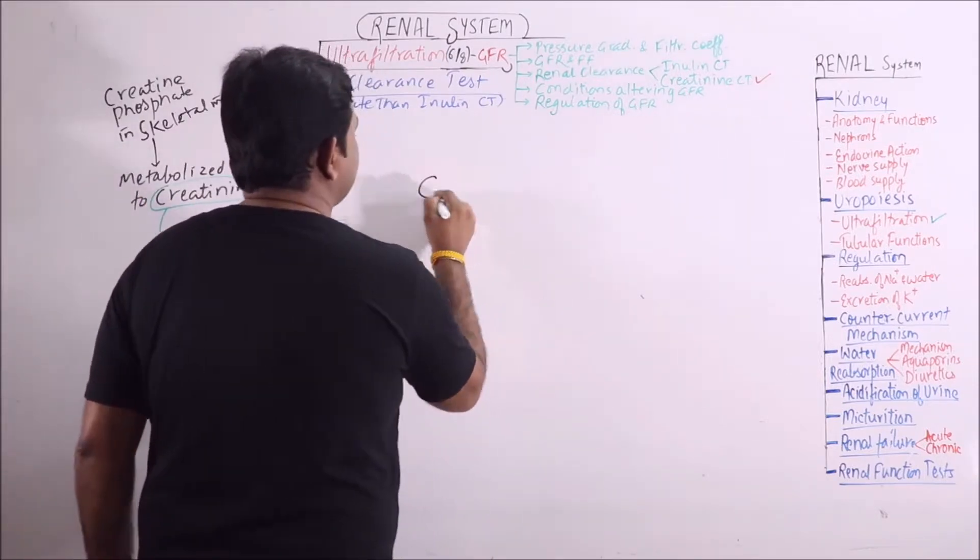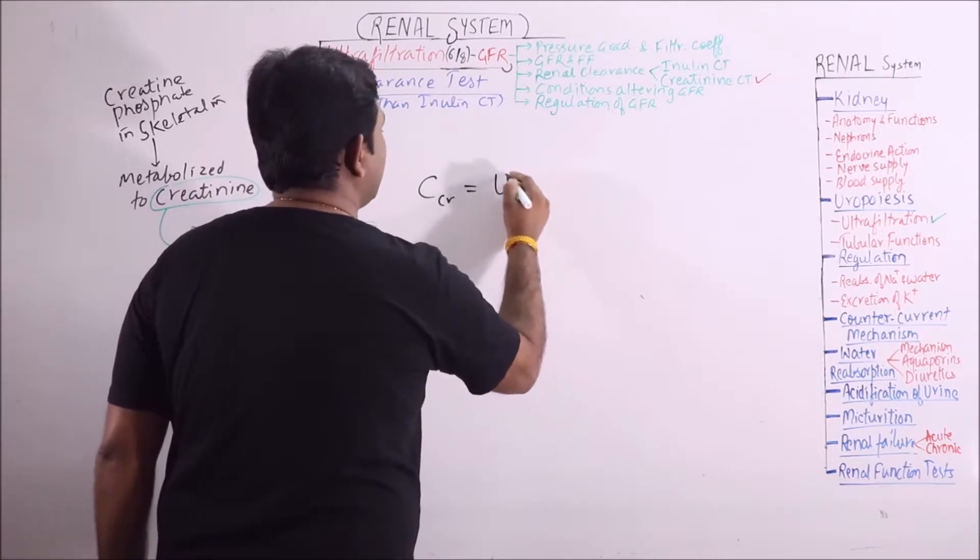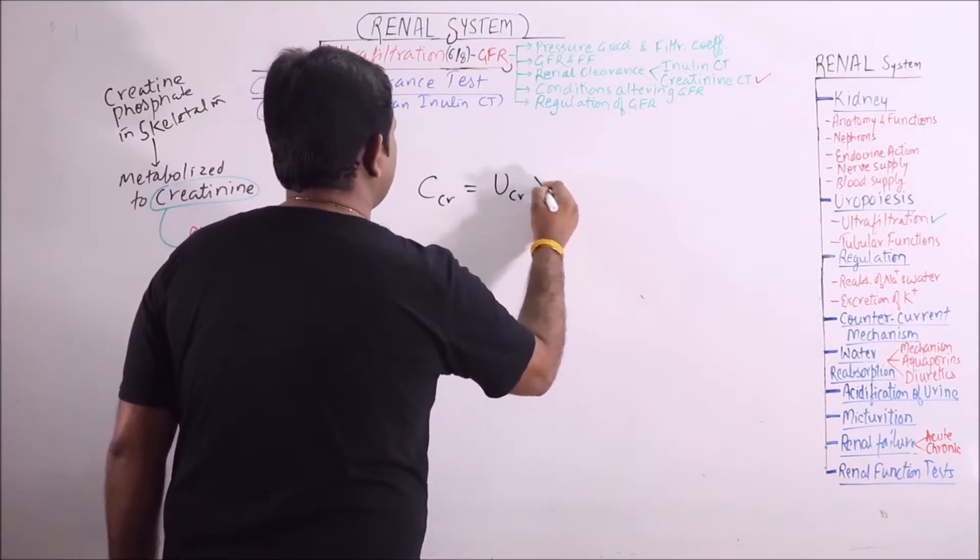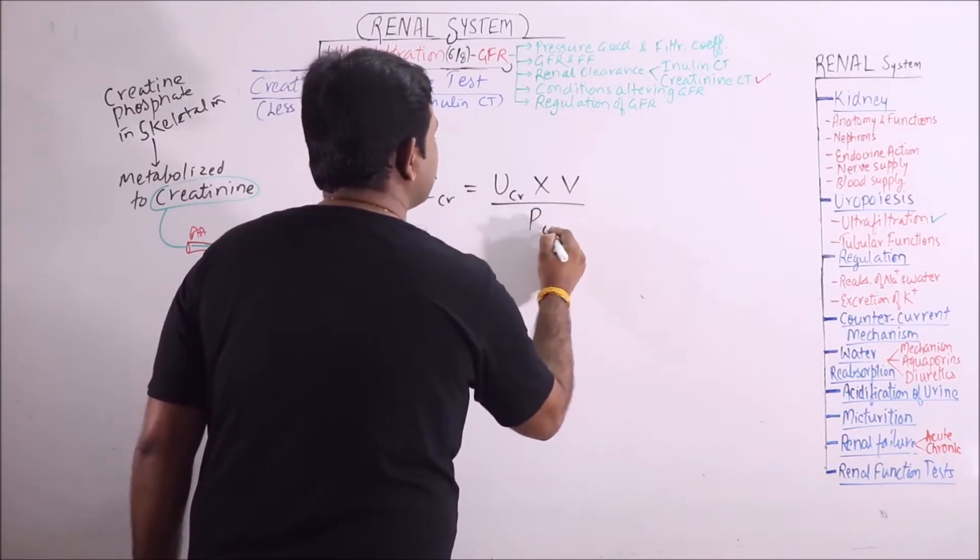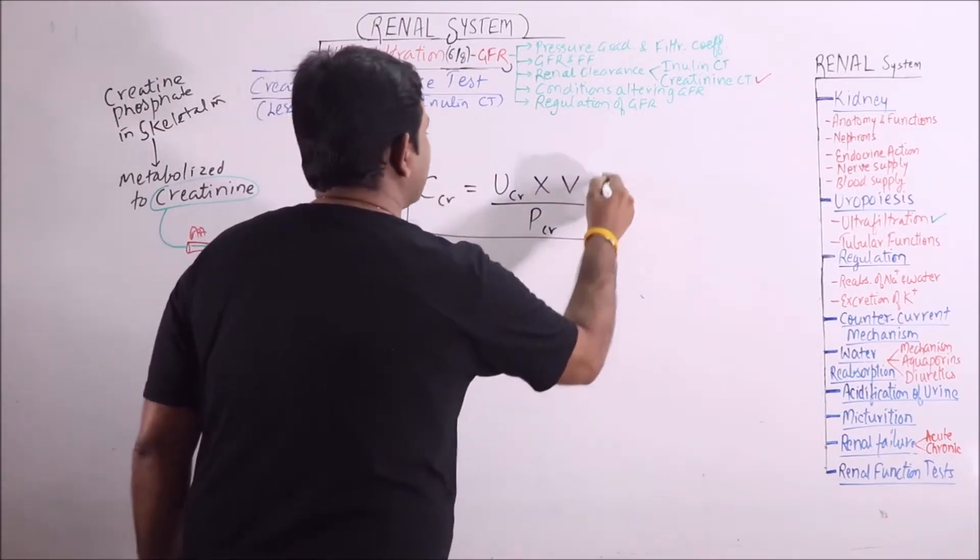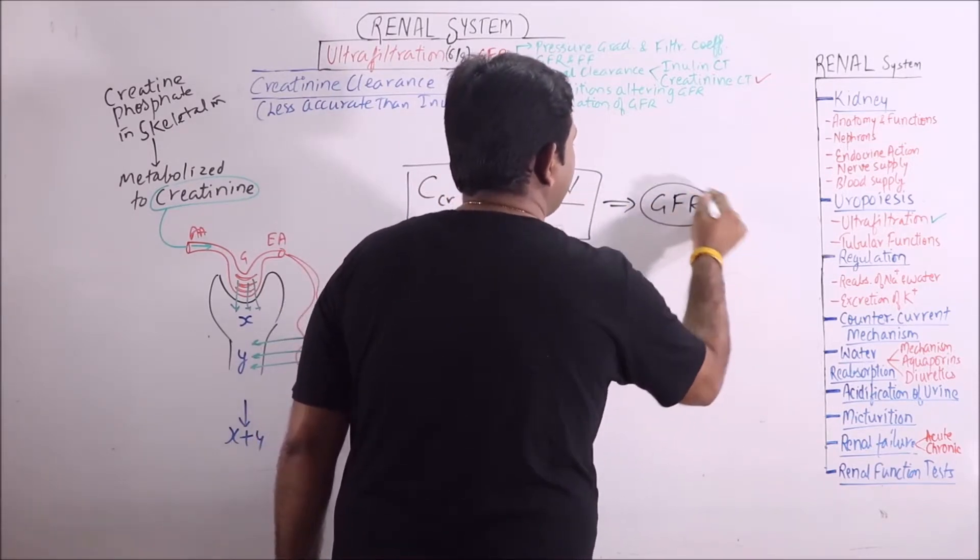So if we calculate the renal clearance of creatinine, it will be Ccr = (Ucr × V) / Pcr. So this value will give the clearance which is considered to be GFR.